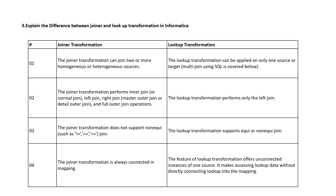The Joiner transformation is always connected in the mapping, whereas the Lookup transformation can be unconnected — meaning it can access lookup data without directly connecting the lookup into the mapping. This is the difference between the Joiner transformation and the Lookup transformation.